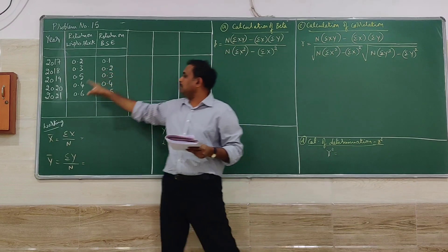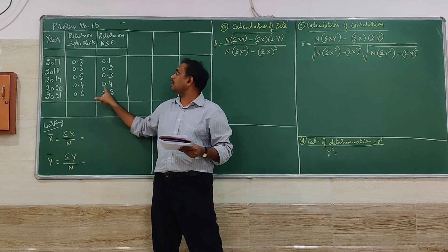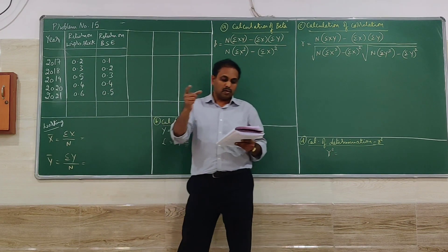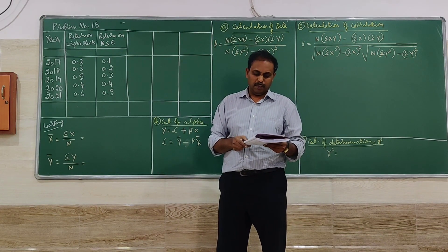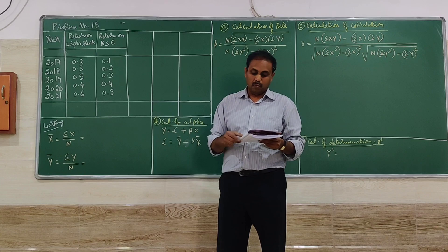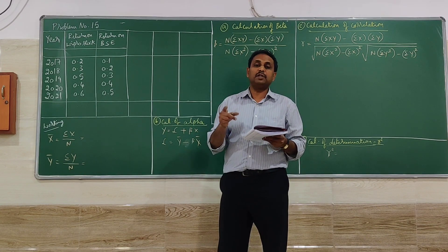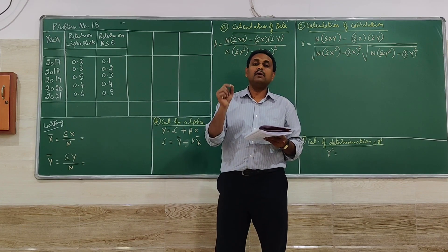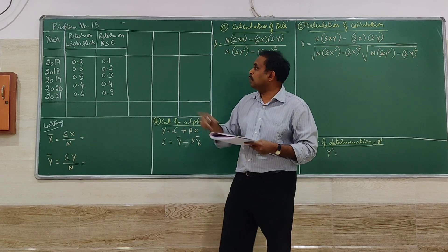So here the information about 5 years is given, 5 years return of Wipro stock, 5 years return of BSE and average is given. So we have to find out there are 4 questions. What is the beta value? First one. What is the alpha value? Second one. What is the coefficient of correlation? What is the coefficient of determination? So there are 4 questions. We will go one by one.